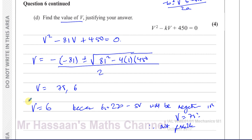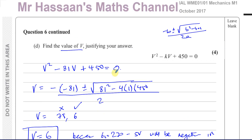So there's the answer to question number 6, requested by one of the students. V equals 6, and we rejected 75 because it makes the problem nonsensical. Other questions from this paper, if I get around to answering them, you'll find them in the playlist. Other questions on speed-time graphs and kinematics from M1 are in the playlist over here. You can subscribe to my channel by clicking this link — thank you for watching and see you soon.